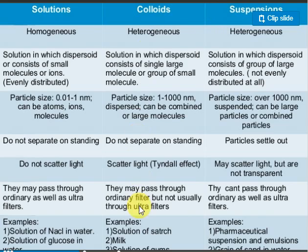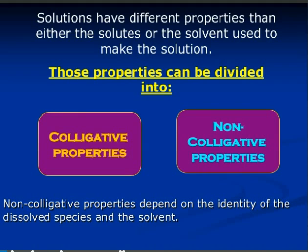Examples: colloidal solution — milk; suspension — sand in water; true solution — salt water. Now let's start a new topic: colligative properties. The properties of any solution — boiling point, freezing point, osmotic pressure, vapor pressure — depend upon the number of solute particles but not on the nature of the solute particles.